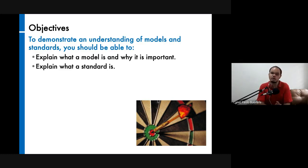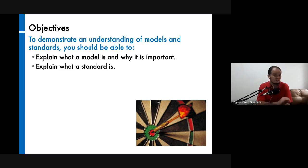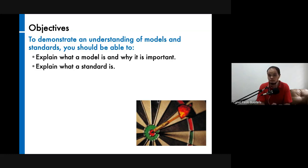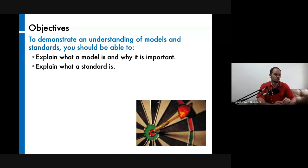Now, if you recall the six architectural elements: you have drivers, goals, and metrics — normally at the business view or business level — and then the other three architectural elements would be principles, models, and standards. We're now talking about the last two elements. They're not really that complicated; however, you need to be aware of what models and standards would be applicable to certain situations.